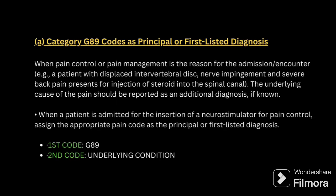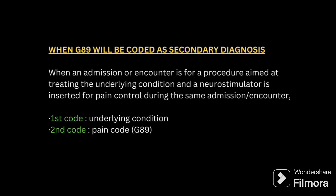Regarding G89 as a principal diagnosis: when a patient comes to the hospital for the treatment of pain, the pain code will be the primary code and the underlying disease condition will be the secondary code. Read the question very carefully. For example, a patient with a displaced intervertebral disc comes in to receive a painkiller — in that case, we assign the pain code as the primary code.